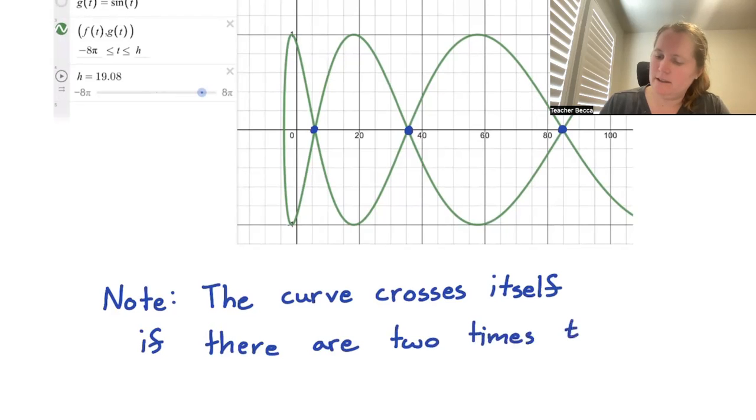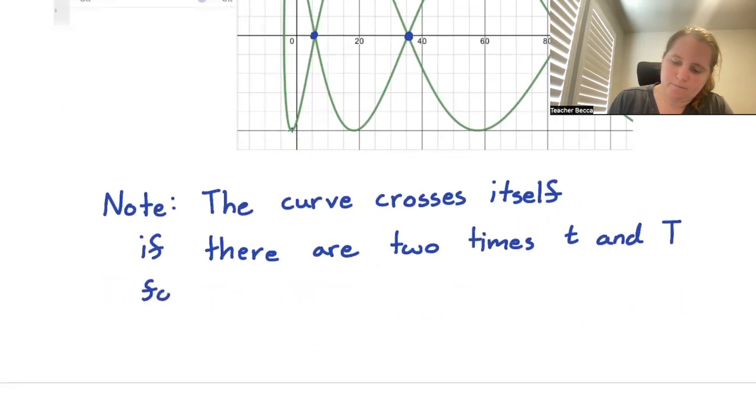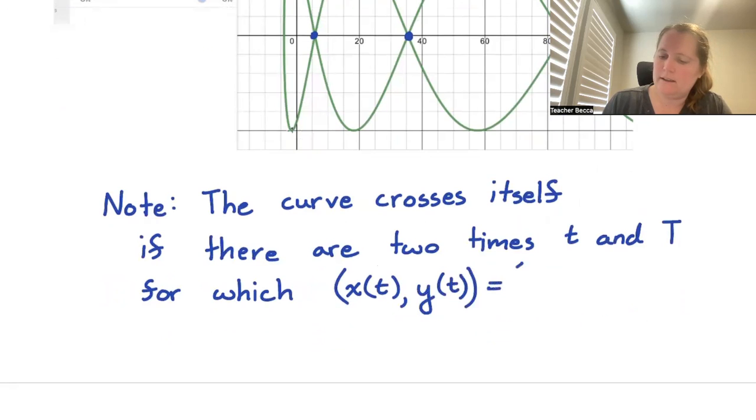Let's call them lowercase t and capital T, for which the point x(t), y(t) is equal to the point x(T), y(T).